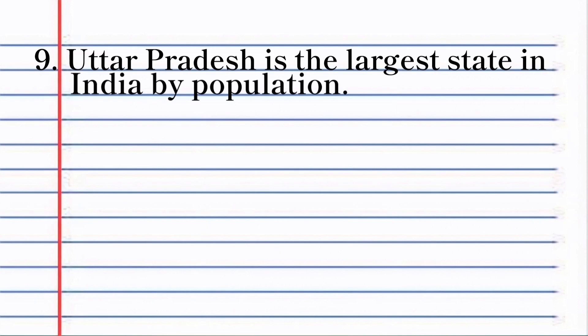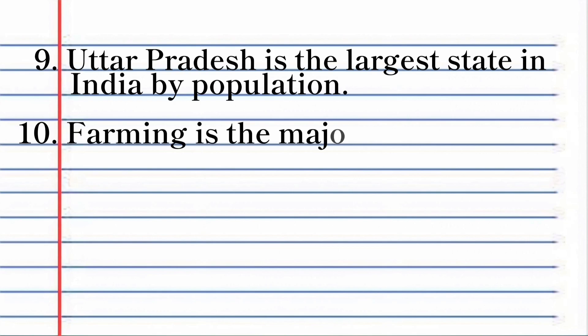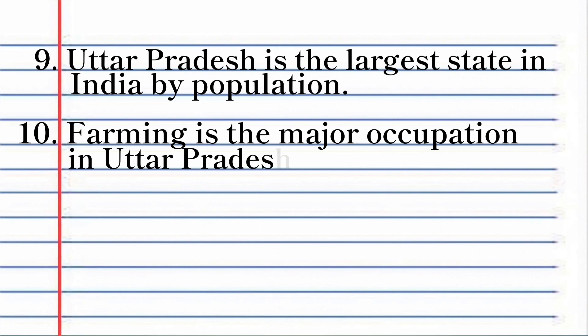Uttar Pradesh is the largest state in India by population. Farming is the major occupation in Uttar Pradesh.